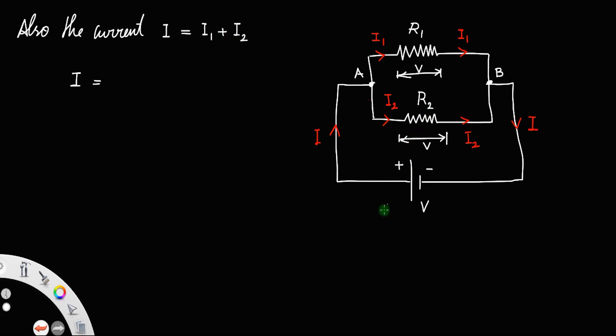Now, from Ohm's law we have V equals I R, and I will be voltage divided by resistance. Therefore, I1 will be V divided by R1 plus I2, which is V divided by R2. Let us call this as equation number 1.